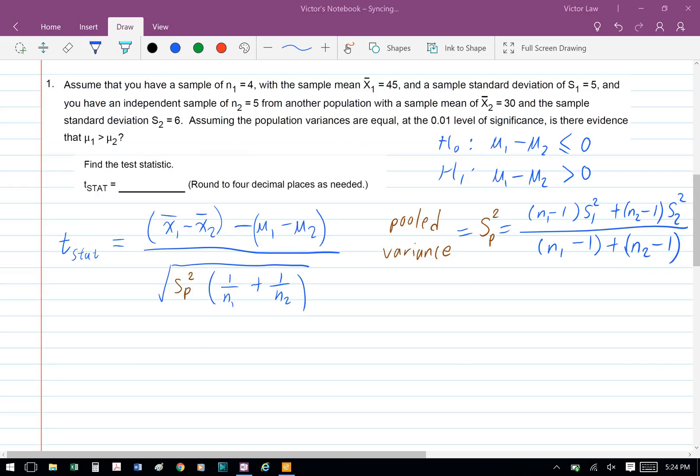Once we have found H0 and H1, we can find the T statistic using the formula: bracket x1 minus x2 bracket minus bracket mu1 minus mu2 bracket divided by sp2 bracket 1 over n1 plus 1 over n2 bracket. And sp2 is our pooled variance.